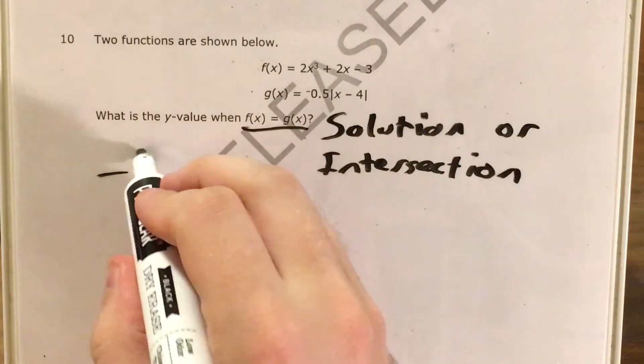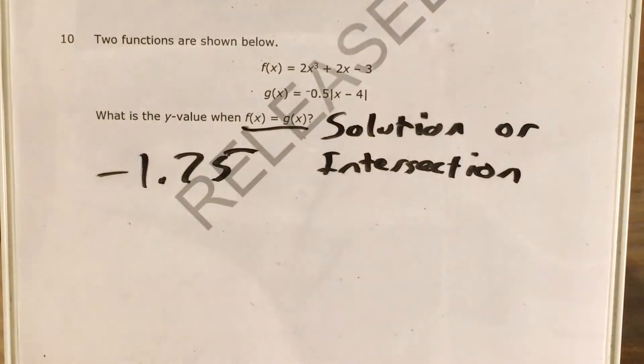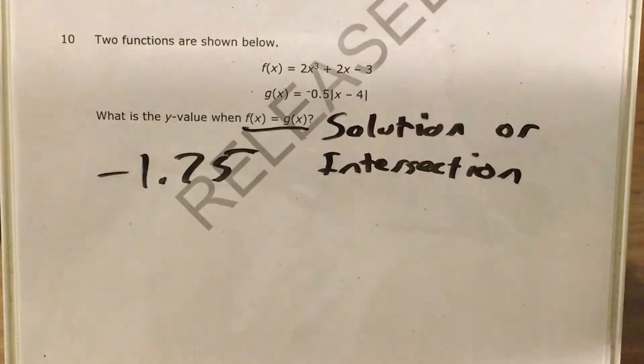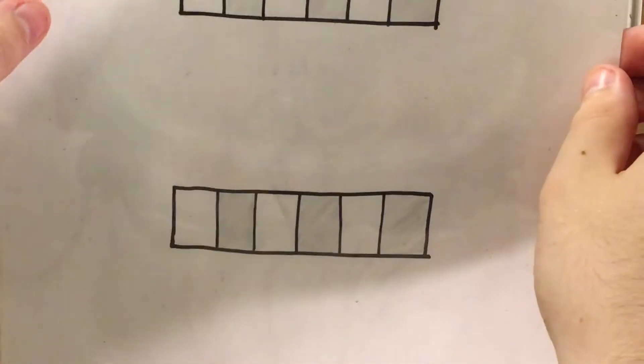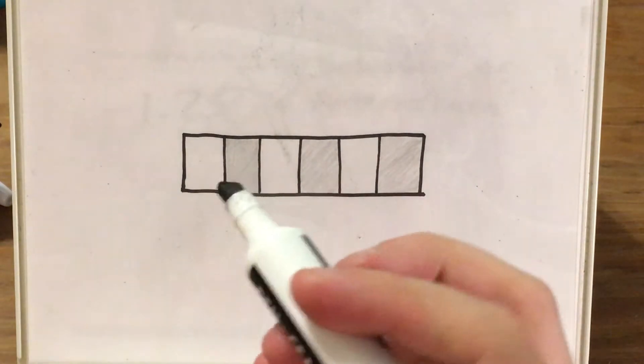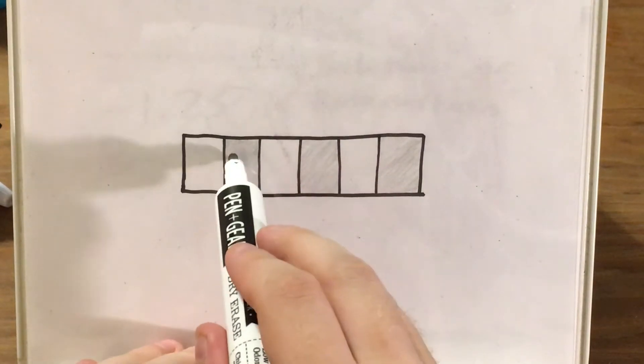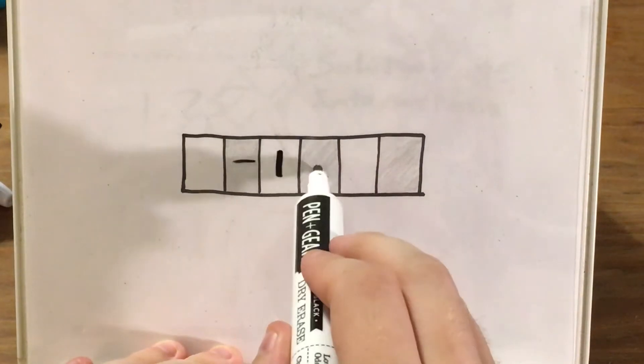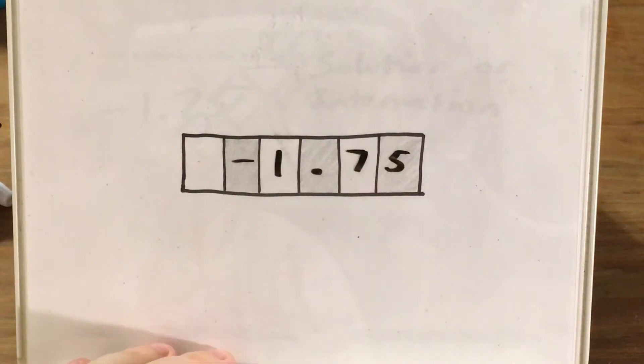So my y value is negative 1.75, thank you Texas Instruments, except now I have to actually write this in as a gridded response answer. So let me get out my sample gridded response page. To write negative 1.75 as an answer in the gridded response page, my negative sign gets a box, my decimal point gets a box, and every number gets its own box.